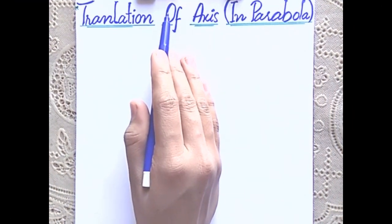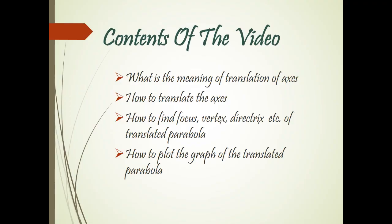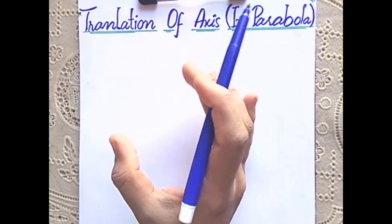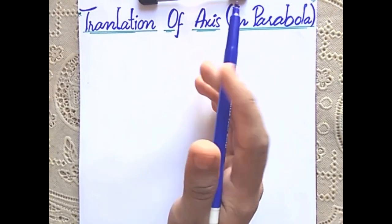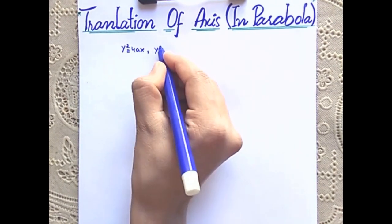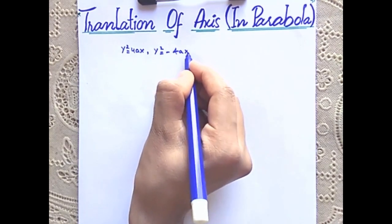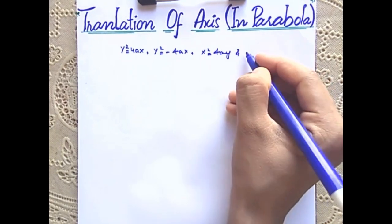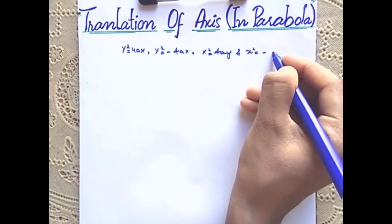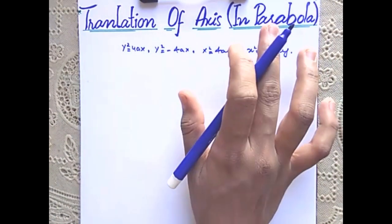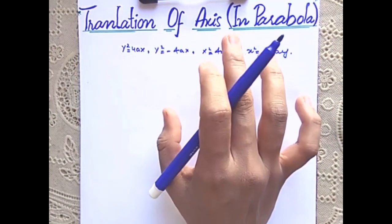Welcome to the Formula Foundation. In previous videos we derived the equations of different types of parabolas like y² = 4ax, y² = -4ax, x² = 4ay, and x² = -4ay. One thing was common in all these equations: the vertex of these parabolas was at the origin.